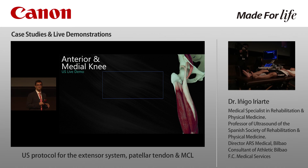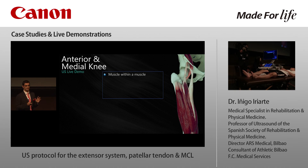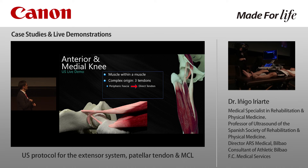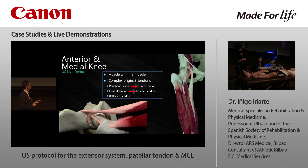The rectus femoris is a very special muscle. In quick sports it gets injured frequently, and it has two components — an inner muscle and an outer muscle — with its origin being very complicated, involving three tendons. The peripheral fascia of the outer muscle forms the direct tendon, inserting at the anterior inferior iliac spine. The inner muscle forms the indirect tendon, and the central tendon, also part of the indirect tendon, inserts at the acetabulum. The reflected tendon is not considered important nowadays.